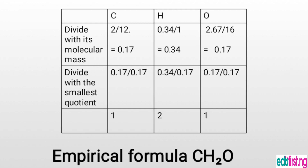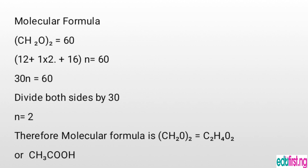Now, how to find the molecular formula. The molecular formula is always a multiple of the empirical formula. In this question we are given a relative molecular mass of the compound as 60 grams per mole. We write (CH₂O)n = 60. The relative atomic masses give us: carbon 12, plus hydrogen 1 times 2, plus oxygen 16 — which equals 30. So 30n = 60, and dividing both sides by 30, we get n = 2.